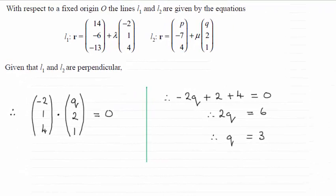Hi there. So for this question then, we were given these two lines L1 and L2, and given that they were perpendicular, we had to show that the value of Q here was 3.